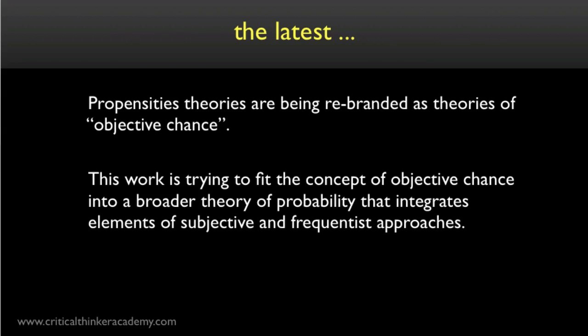So these are some objections to propensity interpretations. But the story isn't all bad. If you survey the literature, you'll see there's been quite a bit of work on propensity interpretations that have been re-branded as theories of objective chance. Here I'm thinking of work by David Lewis, Isaac Levi, Hugh Meller, and including more recent work by people like Carl Hoefer and Michael Strevens and others. These folks are trying to fit the concept of objective chance into a broader theory of probability that integrates elements of subjective and frequentist approaches, and to show how these various probability concepts are implicitly defined by their relationships to one another. From a philosophical standpoint, I think this work is very interesting, but it's still very much a heterogeneous research program with a lot of unresolved problems.